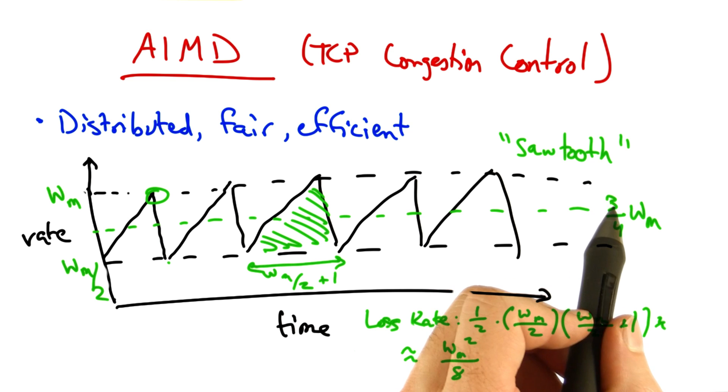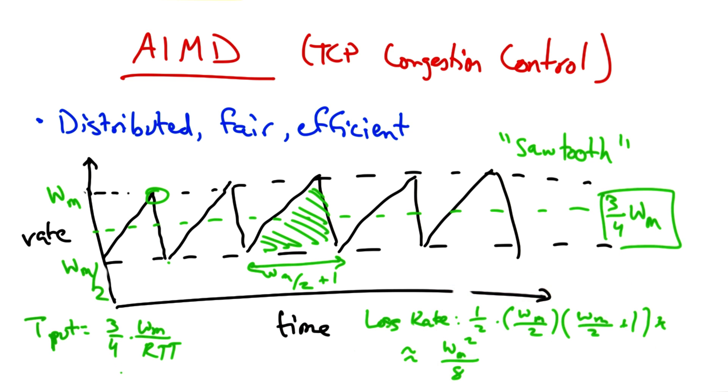Now the throughput is the average rate, 3 fourths W max divided by the RTT. Now if we want to relate the throughput to the loss rate, where we call the loss rate p and the throughput lambda, we simply need to solve for WM.